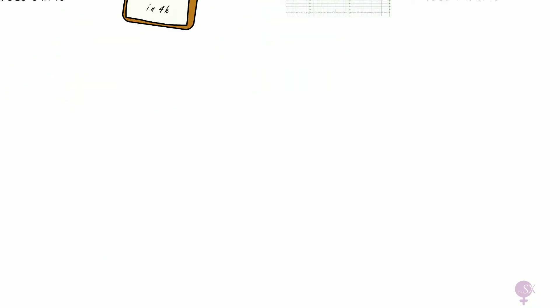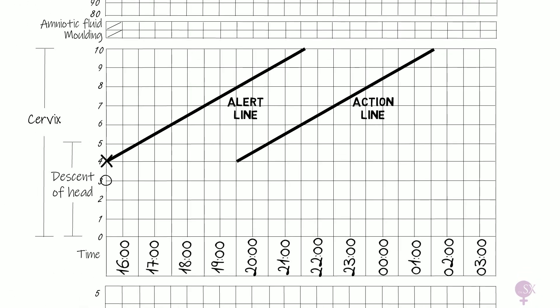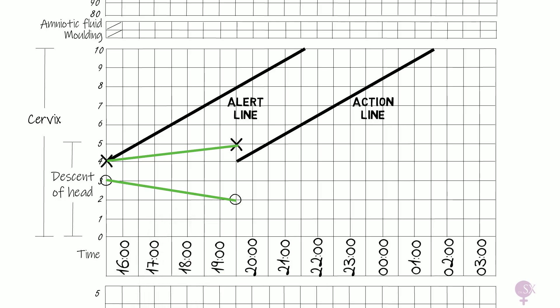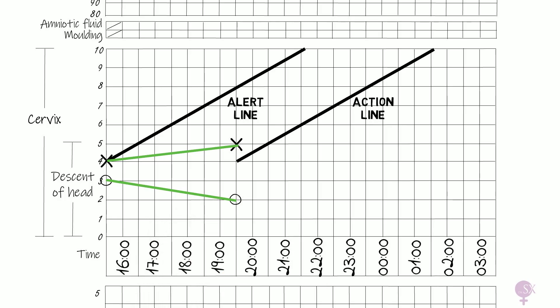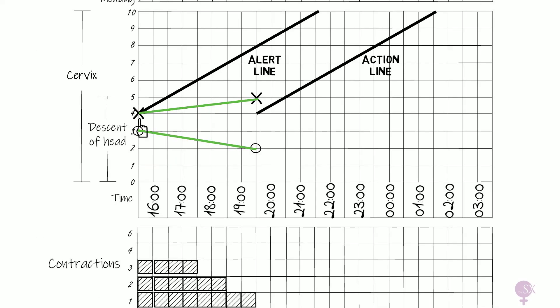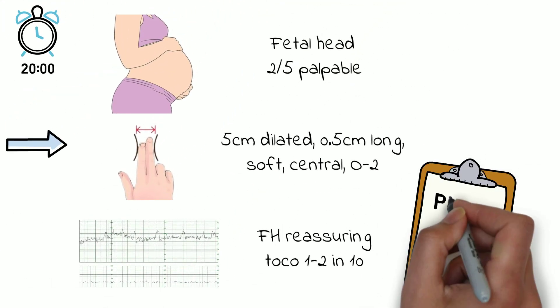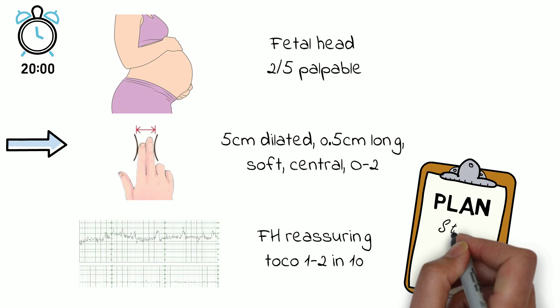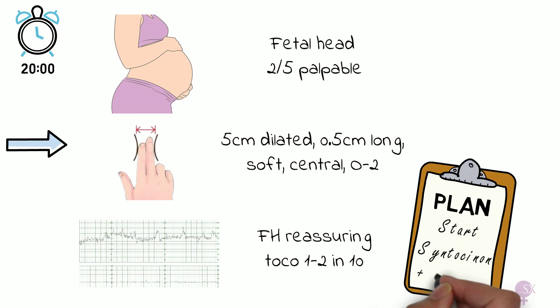Back to our partogram — we mark the cervical dilatation and fetal head descent. As we can see, we have crossed the alert line but not the action line, so we should amend our management plan to avoid reaching the action line. The combination of crossing the alert line and a decline in contractions leads us to plan augmentation by starting Syntocinon and arranging another review in 2 hours.